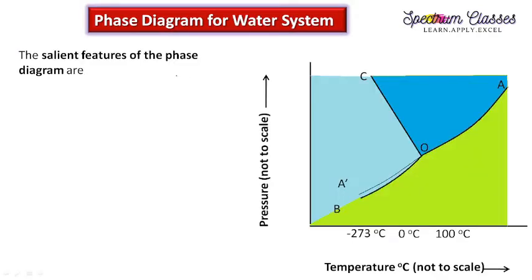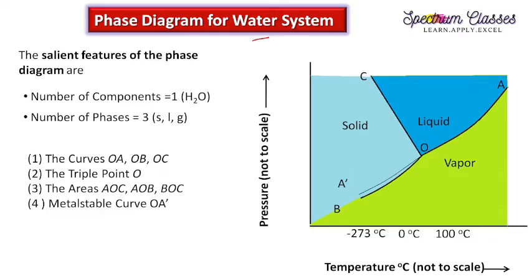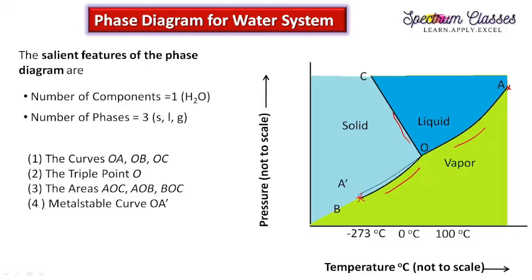Now coming to the salient features of the phase diagram for the water system. This is a three-phase, one-component system. There are three curves: OA, OB, and OC. The OA curve is drawn up to the critical temperature and critical pressure — 374°C and 218 atmospheric pressure — beyond which we cannot draw this curve. The OB curve is drawn down to absolute zero, that is 0 Kelvin or −273°C.